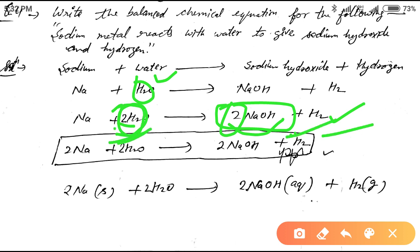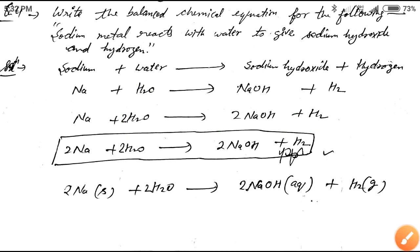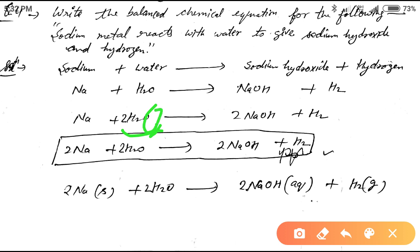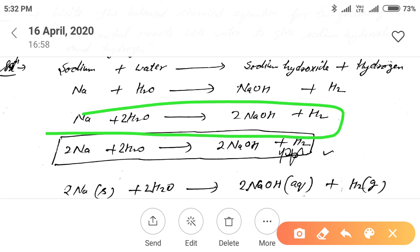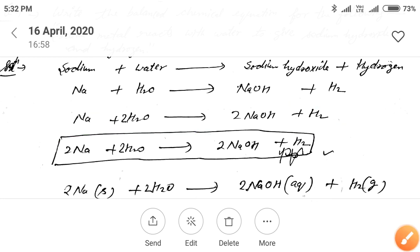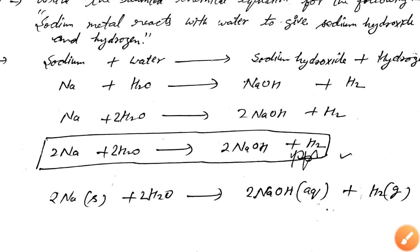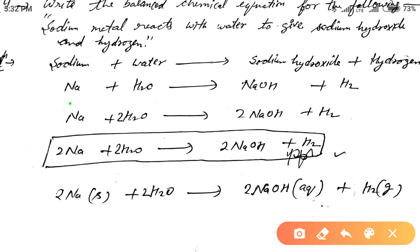Now we check the other atoms. The number of oxygen atoms: two on the reactant side and two on the product side — that's balanced. For sodium: on the reactant side there is one sodium atom, but on the product side there are two. So the equation is still unbalanced and we need to fix sodium.